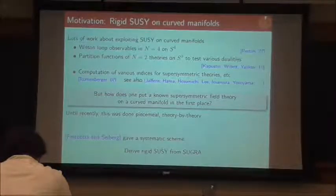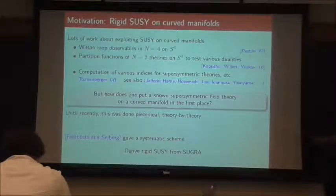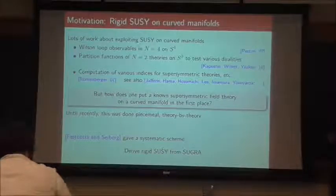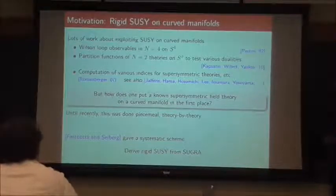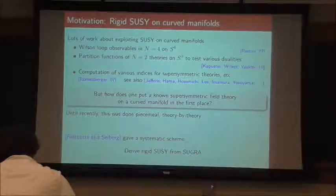This was answered, I think, four years ago now by Festuccia and Seiberg, who gave a systematic approach to this, which was — just in a nutshell — to derive rigid supersymmetry from supergravity. And in a few slides, I'll actually review that in a bit more detail.